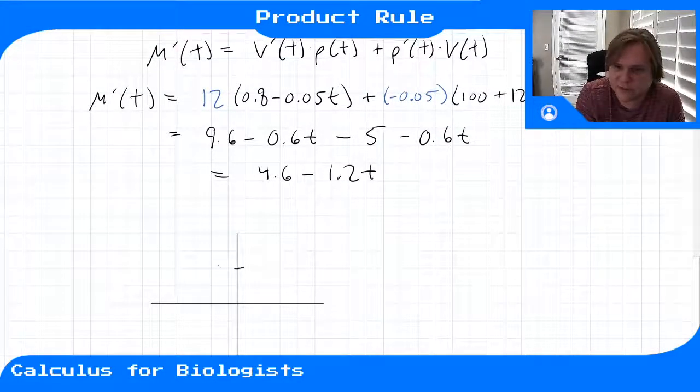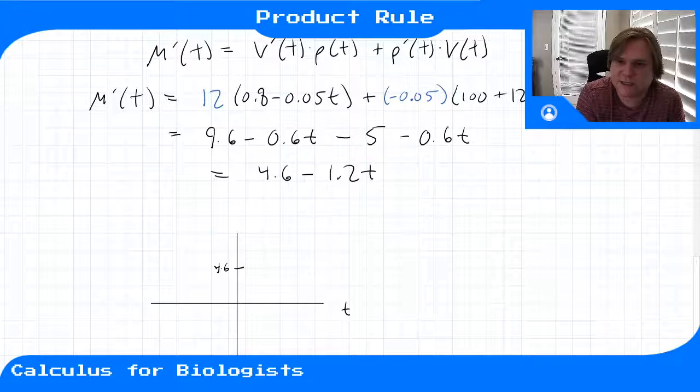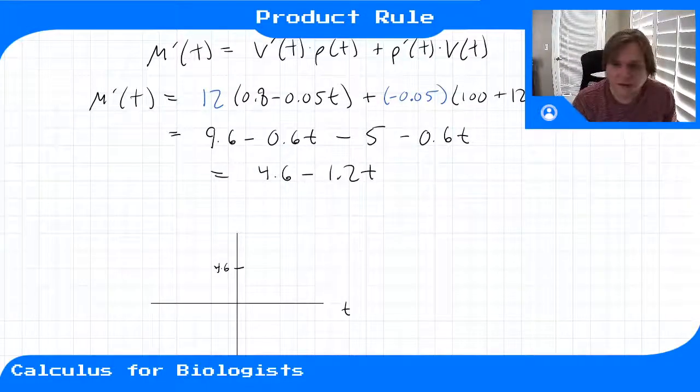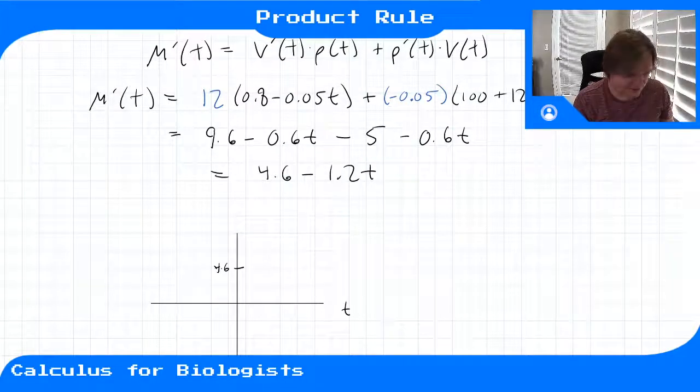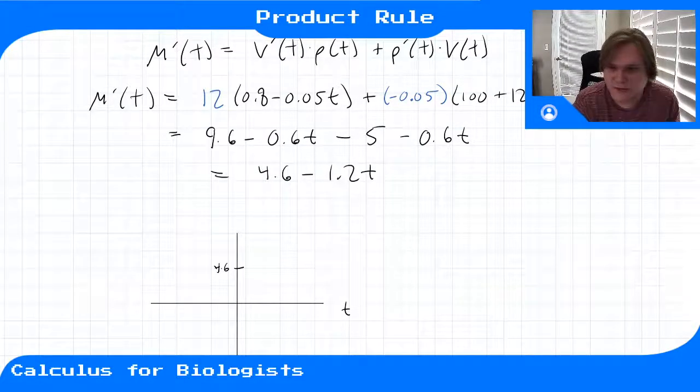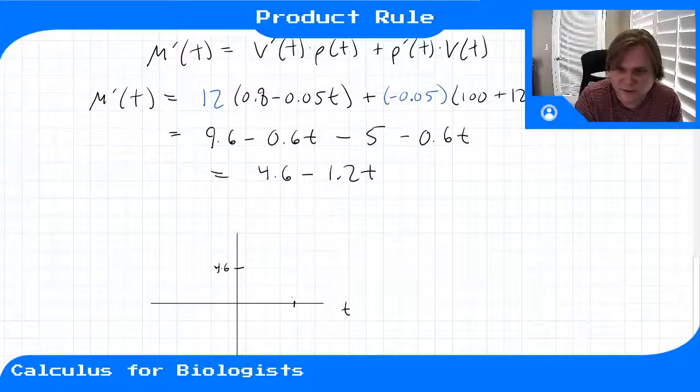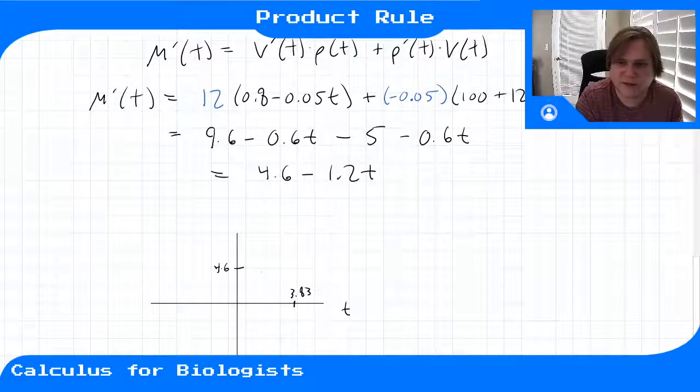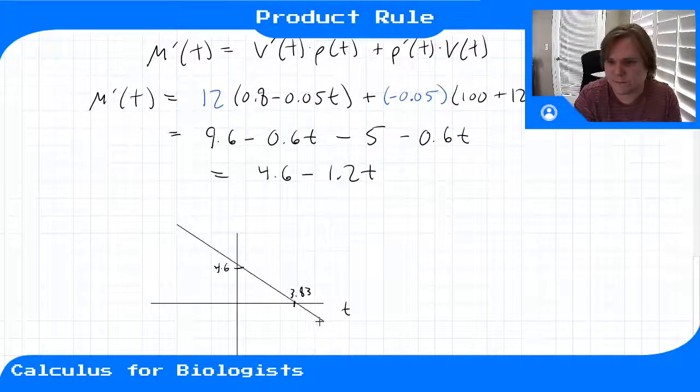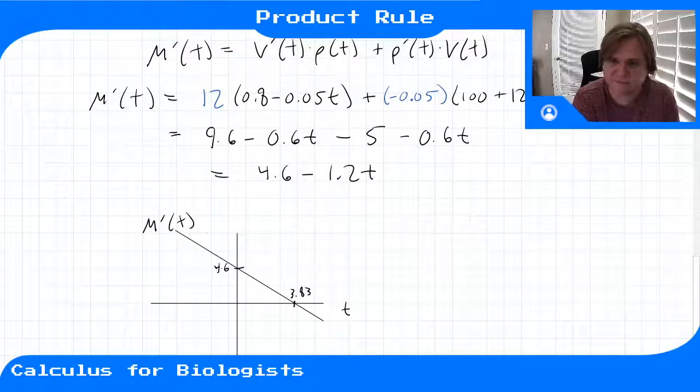So if we were to plot this, we'll create the derivative of this function. The intercept is 4.6, here's t. Let me just think about how to plot this real quick. It has an intersection here at about 3.8, roughly 3.83, and then we'll connect through these two points. So this is our derivative, m prime of t.